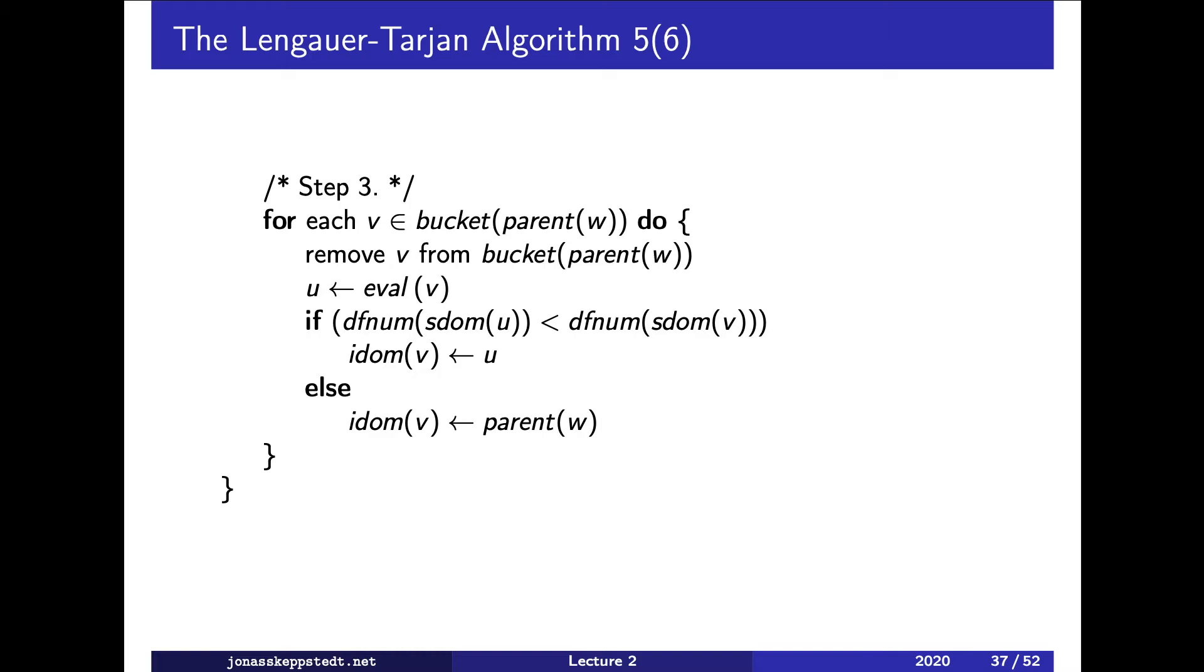We want to detect that there is an incoming edge as the one in the figure from one to three which prevents two from being the immediate dominator of five.